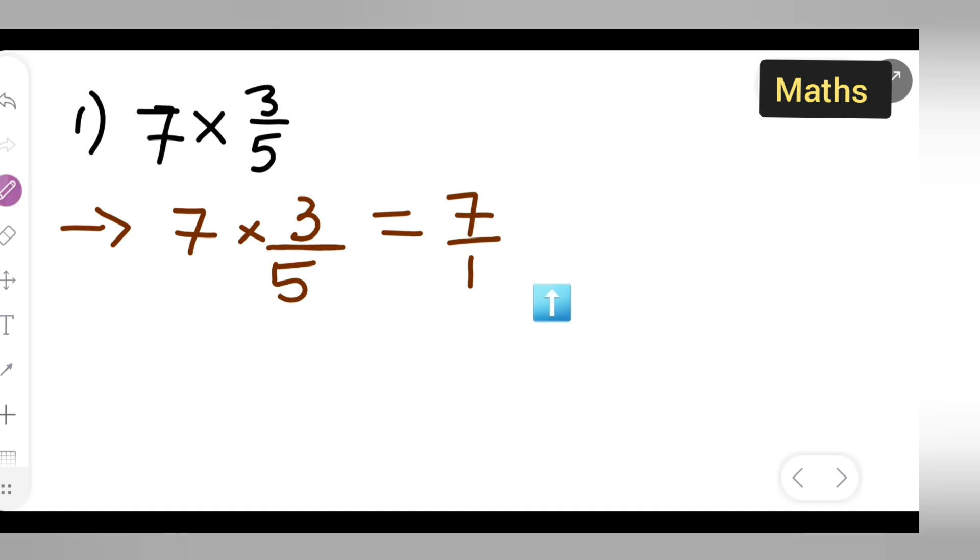So multiplied by you all can write down 3 upon 5. Now this is equal to what? 7 multiplied by 3 upon 1 multiplied by 5. So what answer we are going to get is we have to multiply 7 times 3, we are going to get 21 upon, next you multiply the denominator, 5 times 1 is 5.